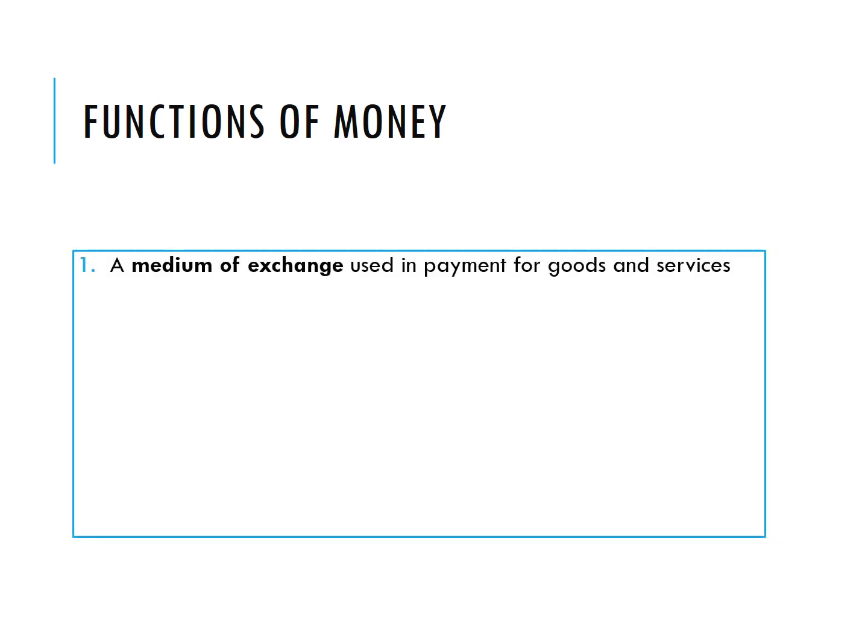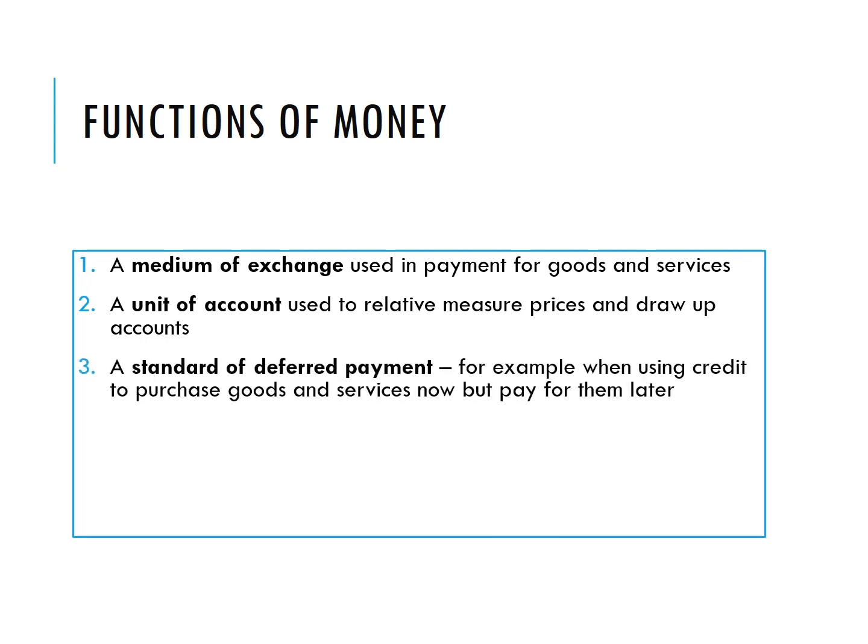There are four functions of money that we need to be aware of. First of all, it is a medium of exchange — it's used in payments for goods and services. So it allows us to say: I'll give you tuition for 40 euros and I can then go out to the shops and buy some shoes for 40 euros. It smooths the flow of exchanges. The second function is a unit of account, so I can easily compare things — 40 euros of tuition is worth more than 30 euros of shoes.